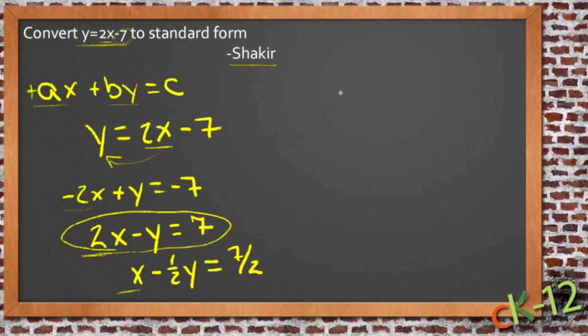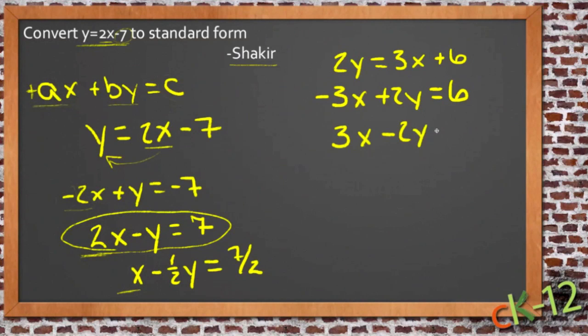So there's your equation written in standard form. Let's do one or two more just for practice. Let's say we have 2y equals 3x plus 6. So again, we want to get the x and the y on the same side, so let's move the 3x over. We'll get negative 3x plus 2y equals 6. And then we'll divide everything by negative 1. That'll give us positive 3x minus 2y equals negative 6.